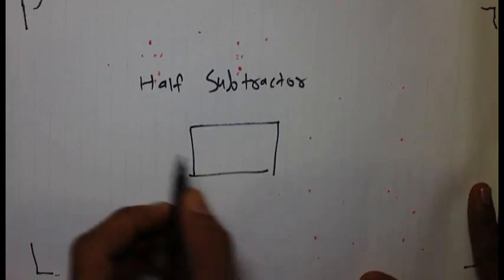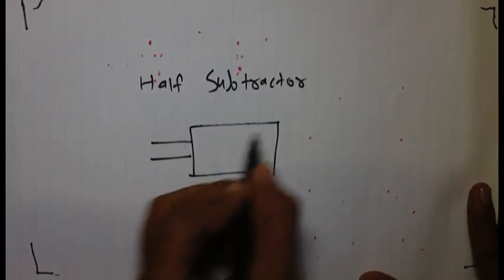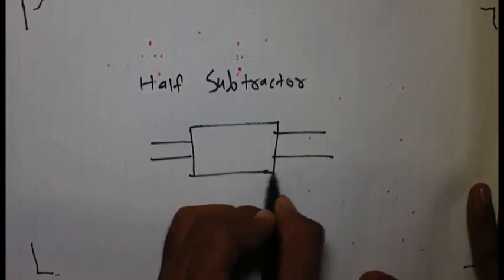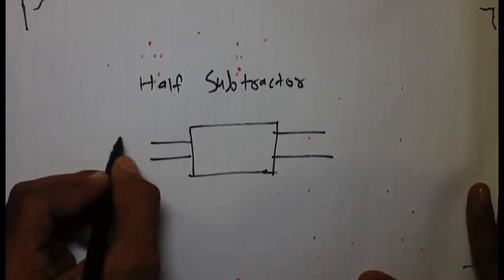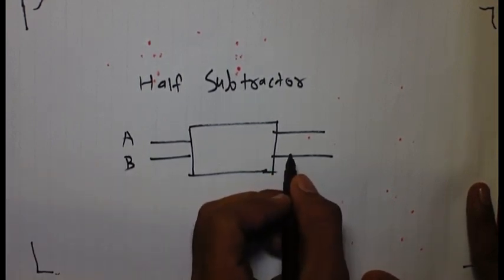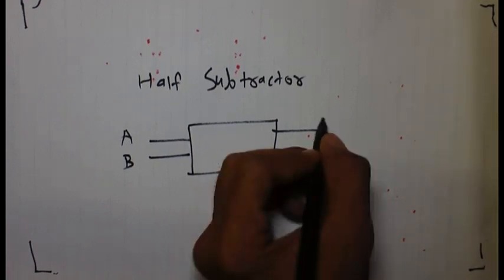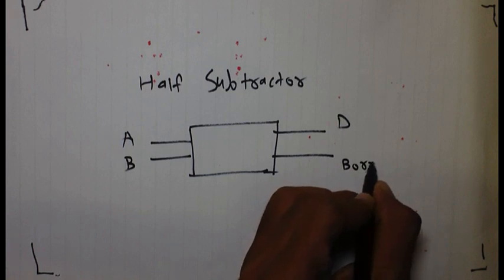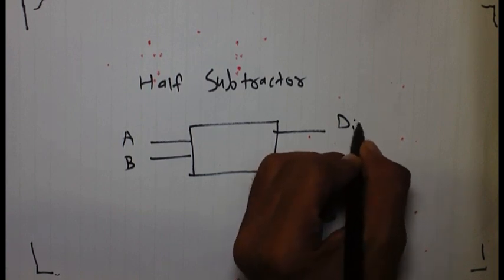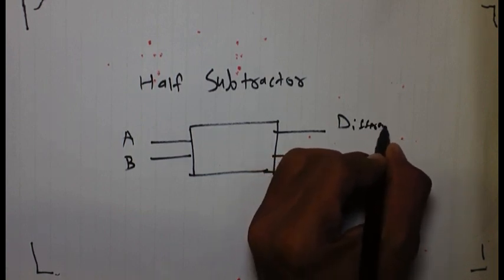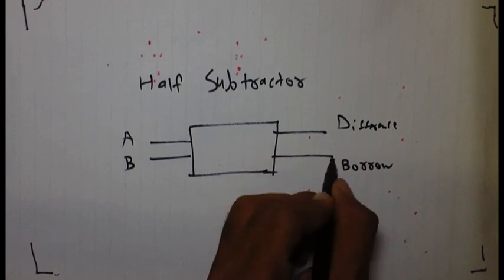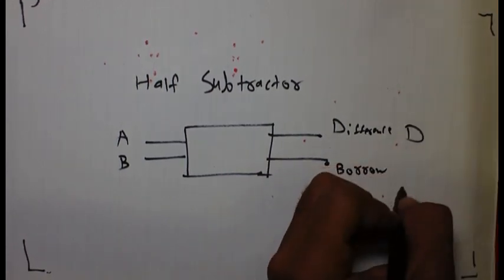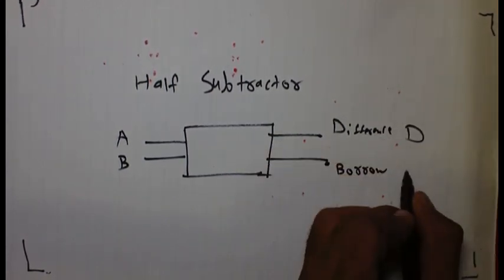Half subtractor is a circuit which has two inputs and two outputs. These two inputs will be two any numbers suppose A and B. And two outputs will be one output will be the difference and second output will be borrow. We will denote it as difference as D and borrow as B out.